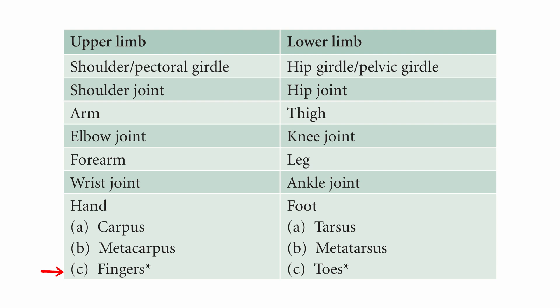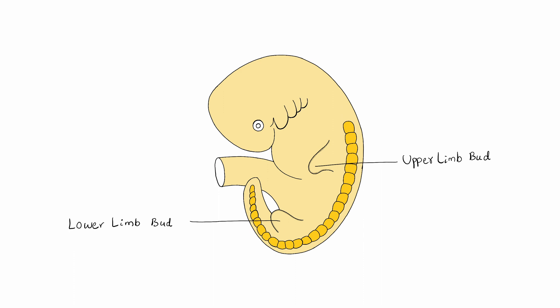In the upper limb, the first digit of the hand is termed the thumb, and in the foot the first digit is termed the great toe. The development of upper and lower limbs begins in the fourth week of intrauterine life. A pair of small elevations appear on the ventrolateral aspect of the embryo called the limb buds. The anterior pair of upper limb buds appear opposite the lower cervical segments; the posterior pair of lower limb buds appear three to four days later at the level of lumbar and upper sacral segments.